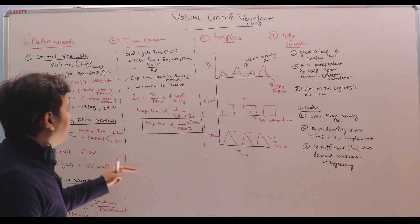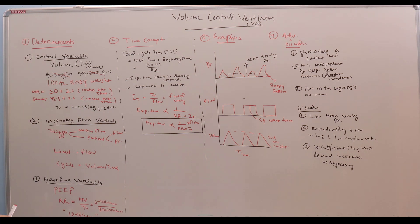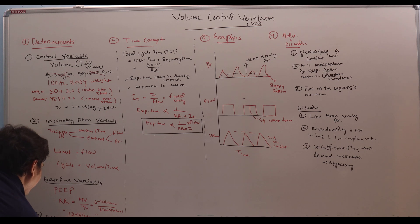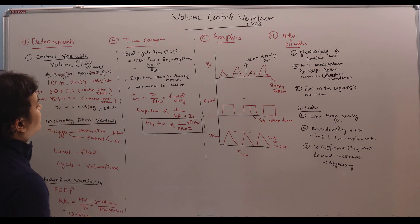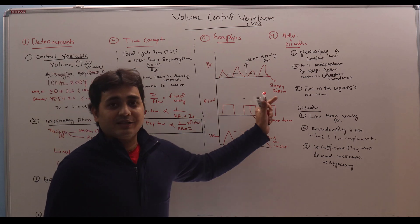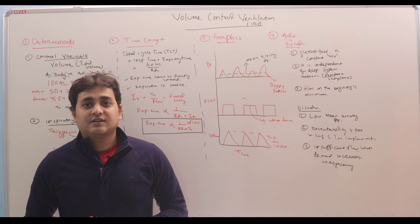So we have discussed volume control ventilation on four headings. First one is determinants. In determinant section, you can add another variable that is called the dependent variable. And that will be your pressure. Pressure is our dependent variable. It will depend upon the respiratory system compliance and resistance. Then we have discussed about the time concept, graphics a little bit and advantage and disadvantage. In our next class, we will discuss about pressure control ventilation. Thank you very much.